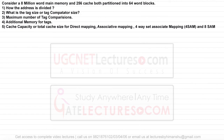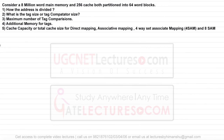Consider this question: we have an 8 million word memory and 256 cache, both partitioned into 64-word blocks. The questions are: how is the address divided, what is the tag size, what is the maximum number of tag comparisons, what is the additional memory for tags, and what is the cache capacity — for direct mapping, associative mapping, four-way set associative mapping, and eight-way set associative mapping.